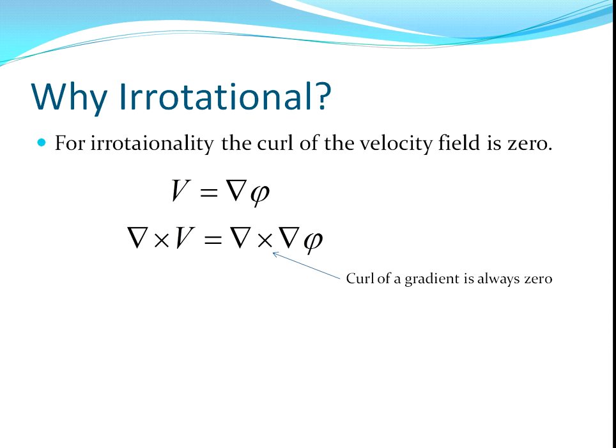You can prove it if you like. It's true. The curl of a gradient is always zero. So, that means that we've got del cross v equals zero. Hence, the flow is irrotational when you have a potential flow.